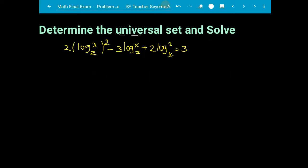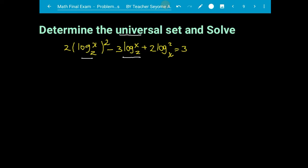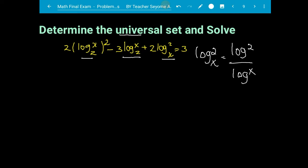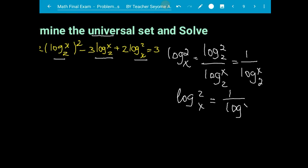To start solving this equation: log x base two and log x base two are the same, but log two to the base x is different from the other two, so you must adjust it first using the base change formula. It will become two log two over log x. If you insert base two, the numerator becomes two log two by two, which is one, and log x base two. So log two base x is equivalent to one over log x base two.